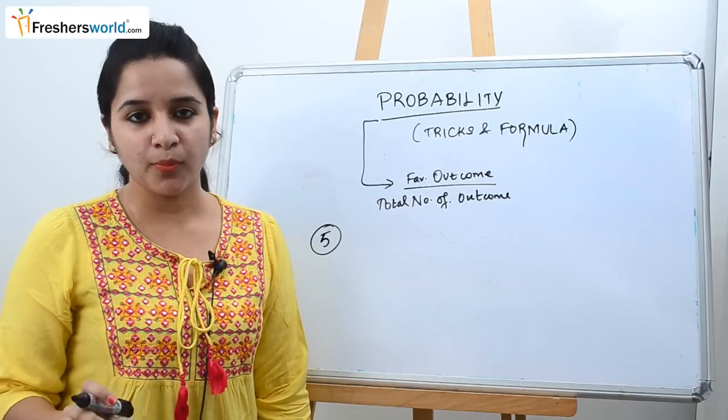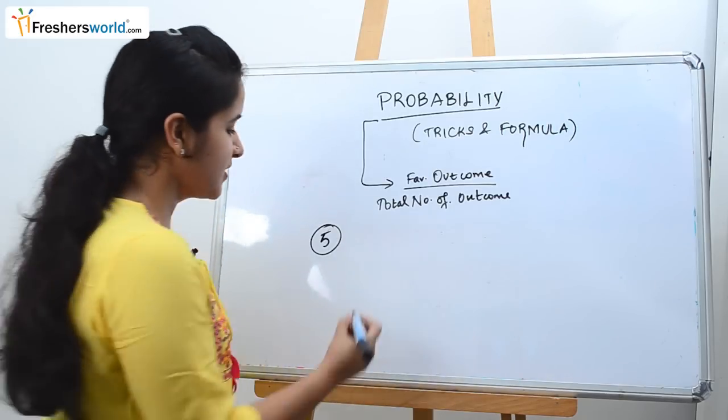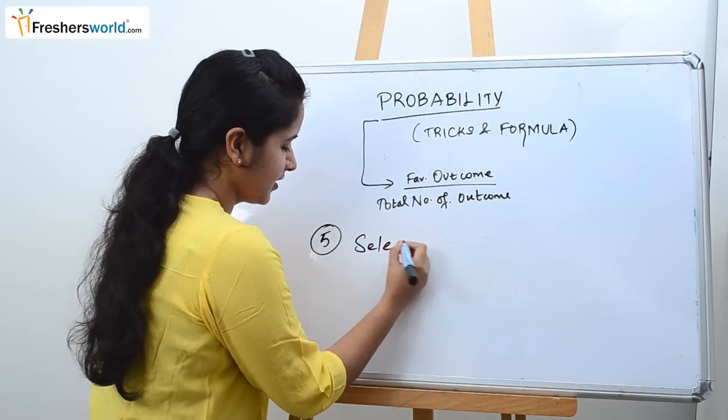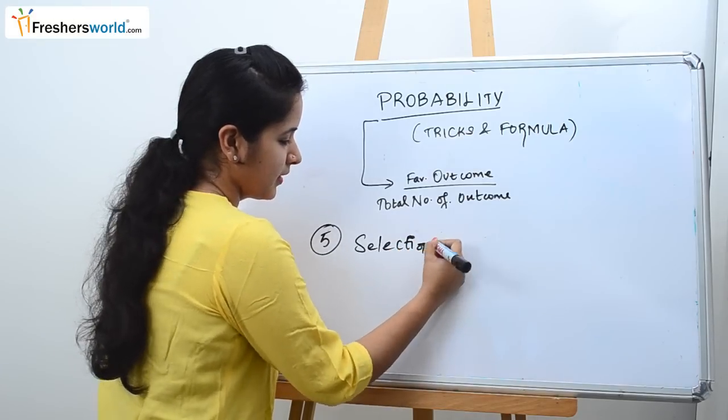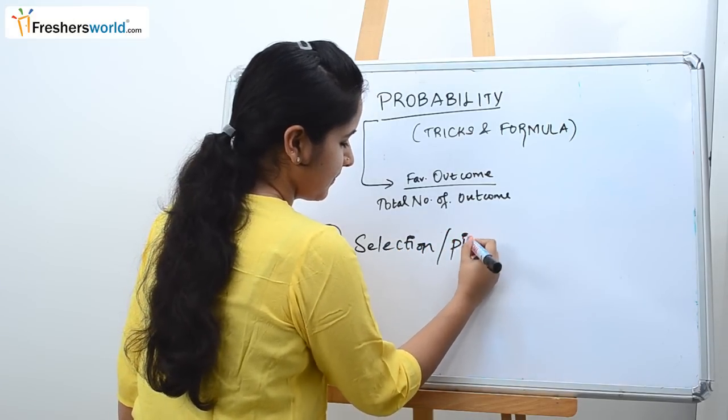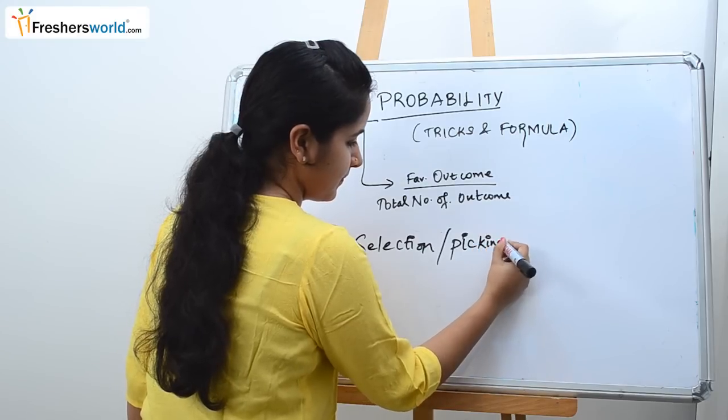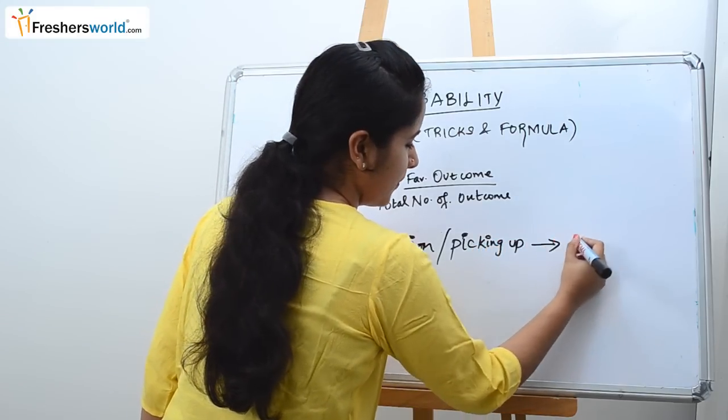So the fifth most important trick is if you see the word selection or picking up it means combination.